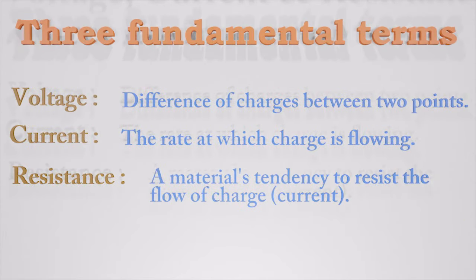When we talk about electricity, there are three fundamental terms we need to understand: voltage, current, and resistance. Voltage is the difference in charge between two points. Current is the rate at which charges are flowing. Resistance is a material's tendency to resist the flow of charges, also known as current.